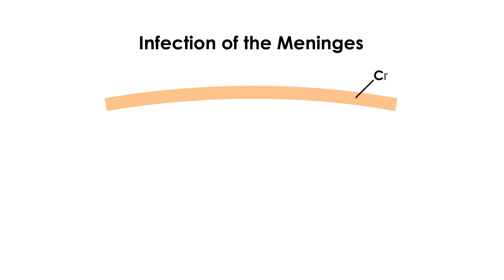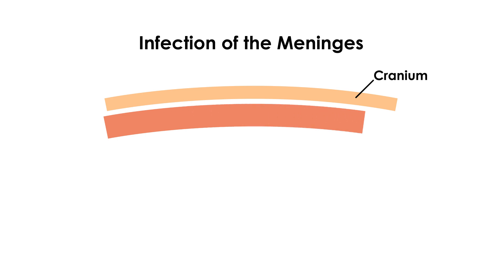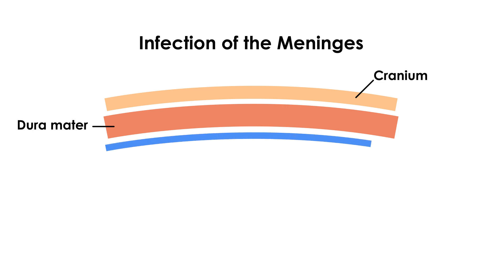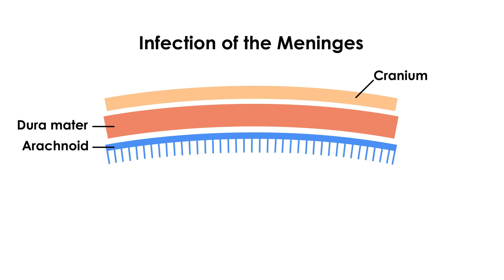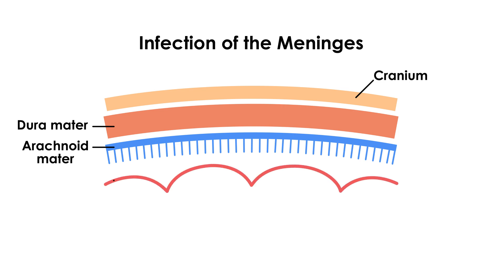First, of course, in the skull you have the cranium. Right below it you have the first layer of the meninges, which is known as the dura mater. Below that you have the second layer, which is the arachnoid mater. Then you have a space underneath that, and then the third and final layer, which is the pia mater. Right below the pia mater is the brain.